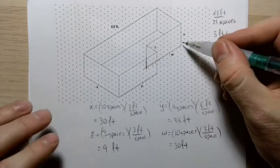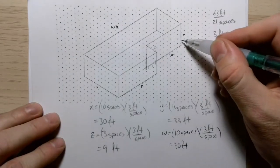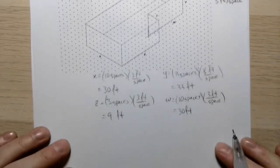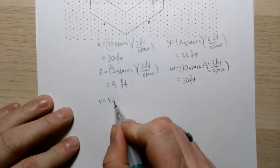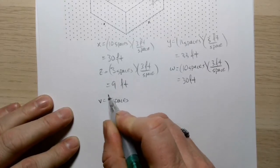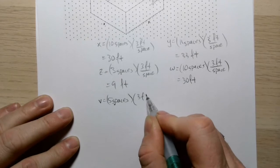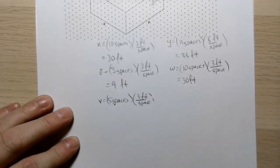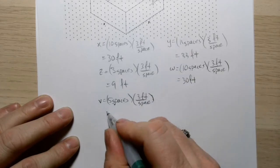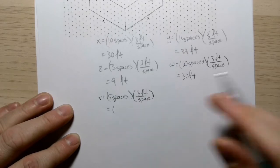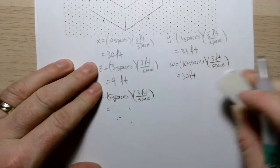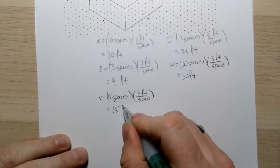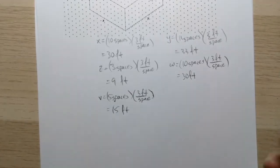Finally, V — going up here — is 5 spaces. Five spaces at 3 feet per space gives 15 feet. You could have used the fact that each space is a half centimeter, but it's not really necessary. Those are all the dimensions we were looking for.